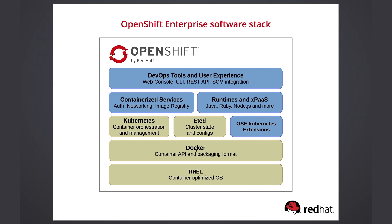Runtimes and xPaaS are base container images ready for use by developers, each pre-configured with a particular runtime language or database. These can be used as-is or extended to add different frameworks, libraries, and other middleware products. The xPaaS offering includes base images for JBoss middleware products such as JBoss EAP and ActiveMQ. On top of the pyramid are DevOps tools and user experience. OpenShift provides web and command line management tools for developers and system administrators, allowing configuration and monitoring of both applications and OpenShift services. Both the web and CLI tools are built from the same REST APIs, which can be leveraged by external tools like IDEs and continuous integration platforms.